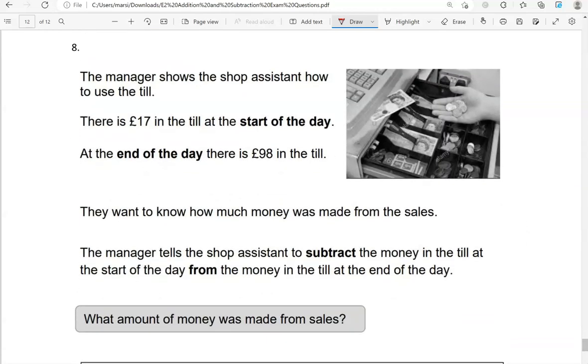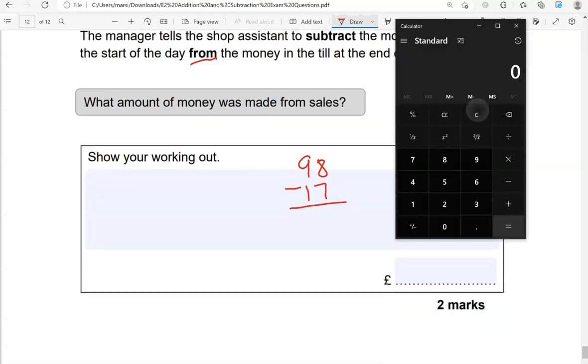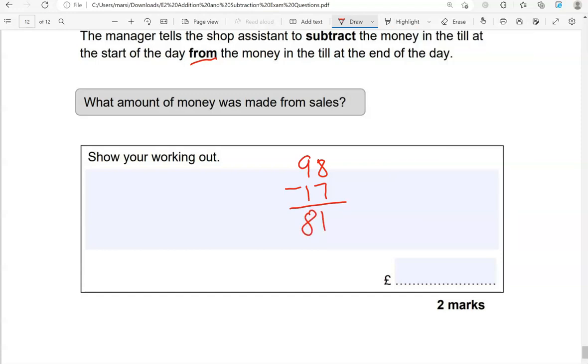The manager shows the shop assistant how to use the till. There is £17 in the till at the start of the day. At the end of the day, there is £98 in the till. They want to know how much money was made from the sales. The manager tells the shop assistant to subtract the money in the till at the start of the day from the money in the till at the end of the day. So to subtract from, that means we need to start with the 98 and take away the 17. So as we can use a calculator, we'll go 98 take away 17, gives us 81. 81 pounds.